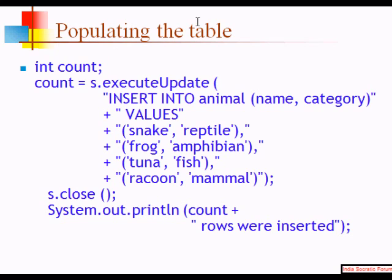This is how you insert data into a table — that's called populating the table. Use executeUpdate with INSERT INTO, specifying the animal name and category columns. Then use the word VALUES, and use the plus symbol to concatenate the two literal strings with the values for name and category.